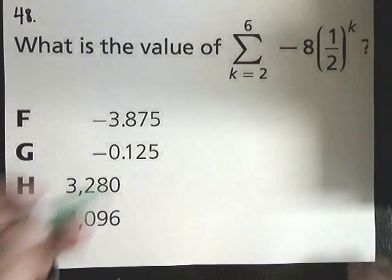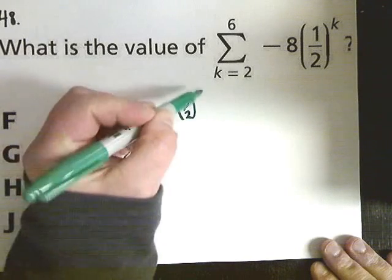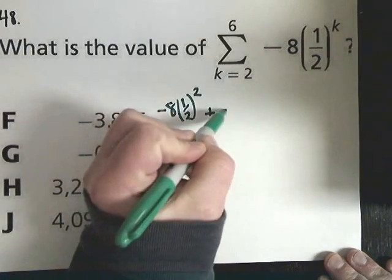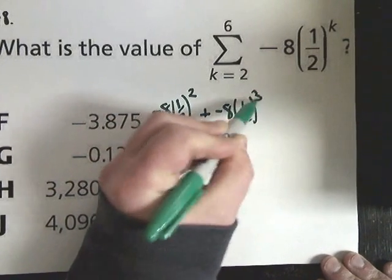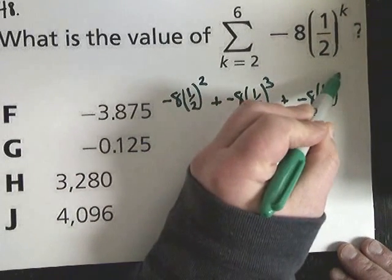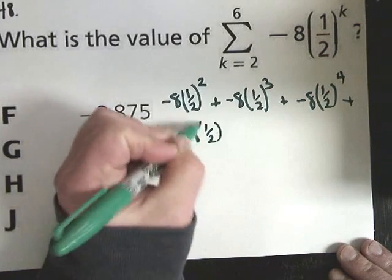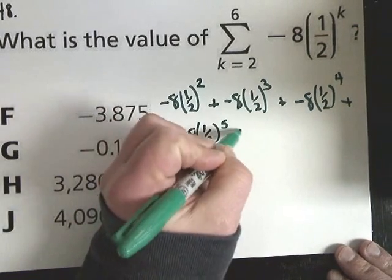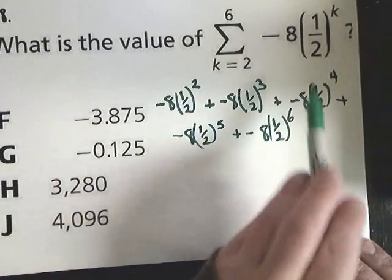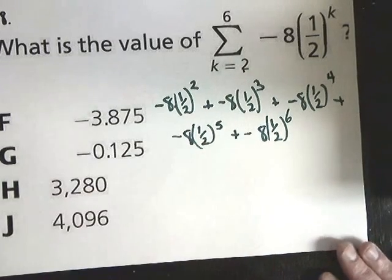Essentially what that means is we're going to have negative 8 times 1/2 raised to the 2nd power, and we're going to add it to negative 8 times 1/2 raised to the 3rd, plus negative 8 times 1/2 raised to the 4th power, plus negative 8 times 1/2 raised to the 5th power, plus negative 8 times 1/2 raised to the 6th power. So we're taking the sequence that they give us, or the generic term, plugging in 2, 3, 4, 5, and 6, because it told us to go from 2 to 6.